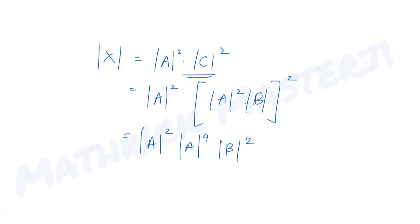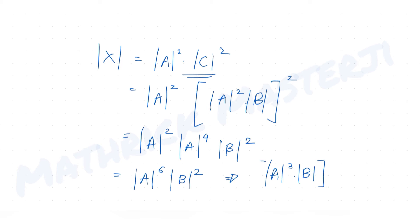This simplifies to det(A)⁶ · det(B)², or equivalently (det(A)³ · det(B))². Now let's compute det(A) and det(B) individually and substitute into this expression.